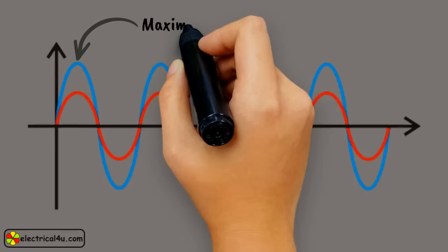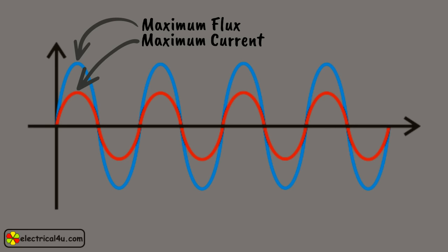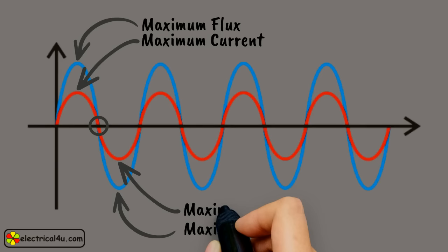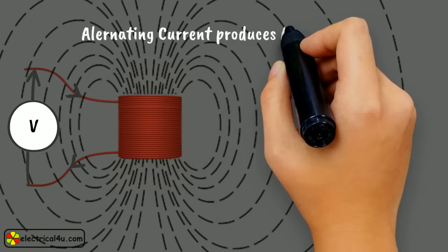then the thumb indicates the direction of produced flux inside the coil along the axis. This flux becomes maximum in magnitude when current reaches its maxima for one half cycle of the alternating current wave. The flux becomes zero when current in the coil crosses zero axis. Again, for the next half cycle, the flux becomes maximum but in the opposite direction when current reaches its reverse maxima. In this way, alternating current produces continually varying flux surrounding the winding.